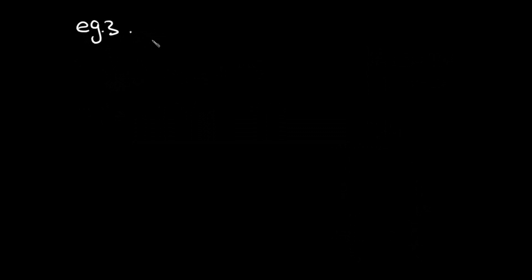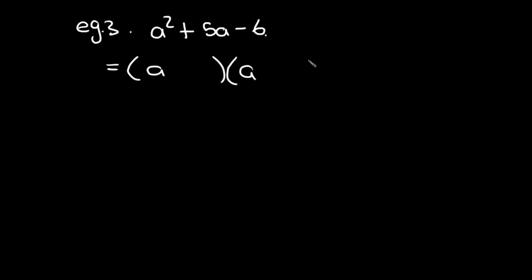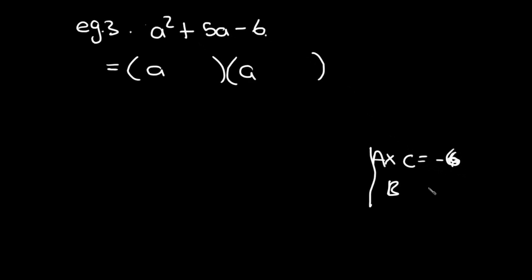Example three: a² + 5a - 6. We open the brackets with (a)(a). The last term is negative, so we know one bracket will be positive and one will be negative. Using our rule: a × c = 1 × (-6) = -6, and b = +5. So whatever two numbers we use must multiply to give -6 and add to give +5.